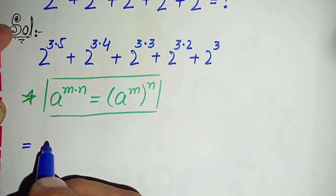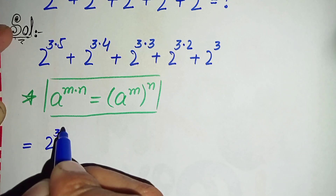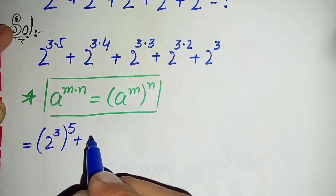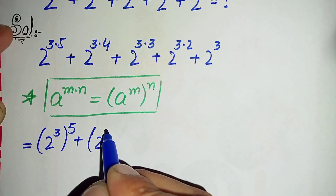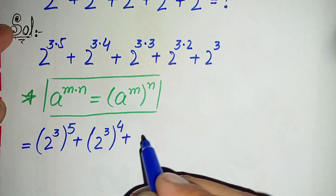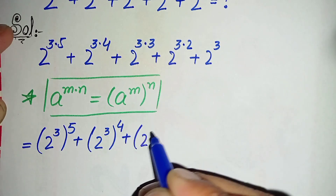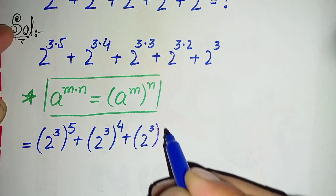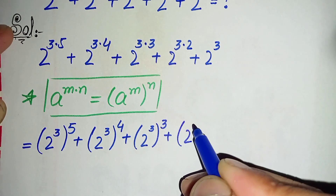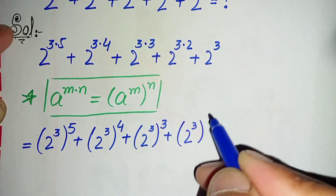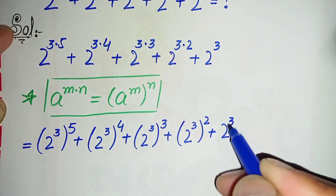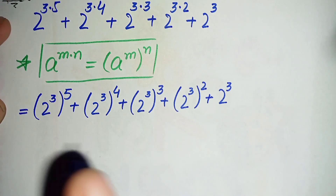By using this exponential property in the first four terms, the equation becomes: (2 raised to power 3) raised to power 5, plus (2 raised to power 3) raised to power 4, plus (2 raised to power 3) raised to power 3, plus (2 raised to power 3) raised to power 2.